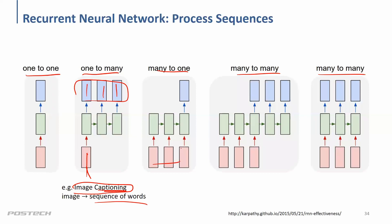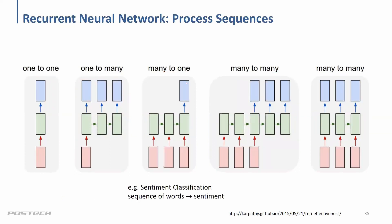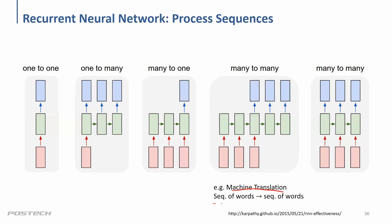Many-to-one is used for classifications — you read some kind of sentence and your task is to decide what kind of emotion the author has. Many-to-many is like machine translation — a sequence of Korean language mapped to a sequence of English words.